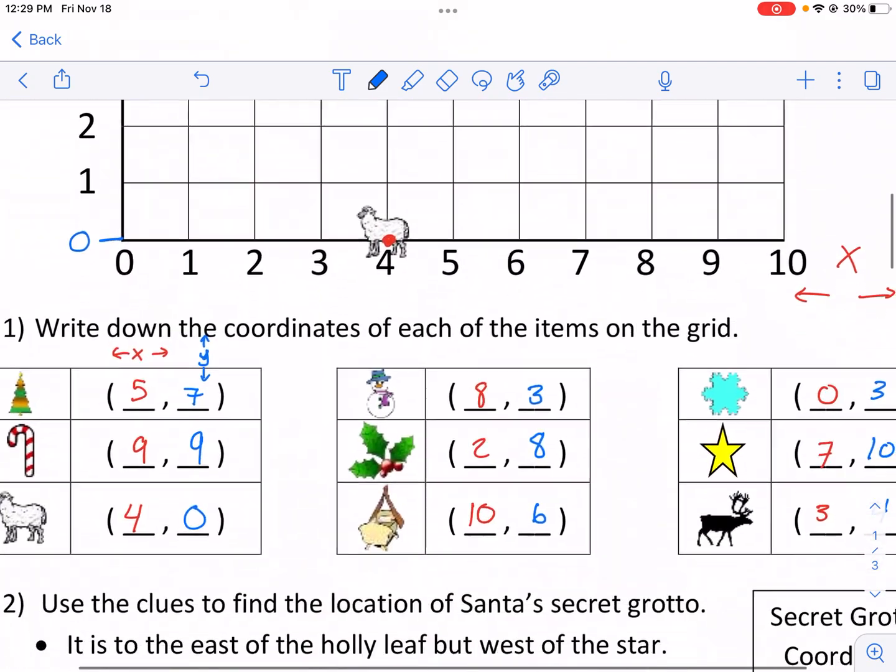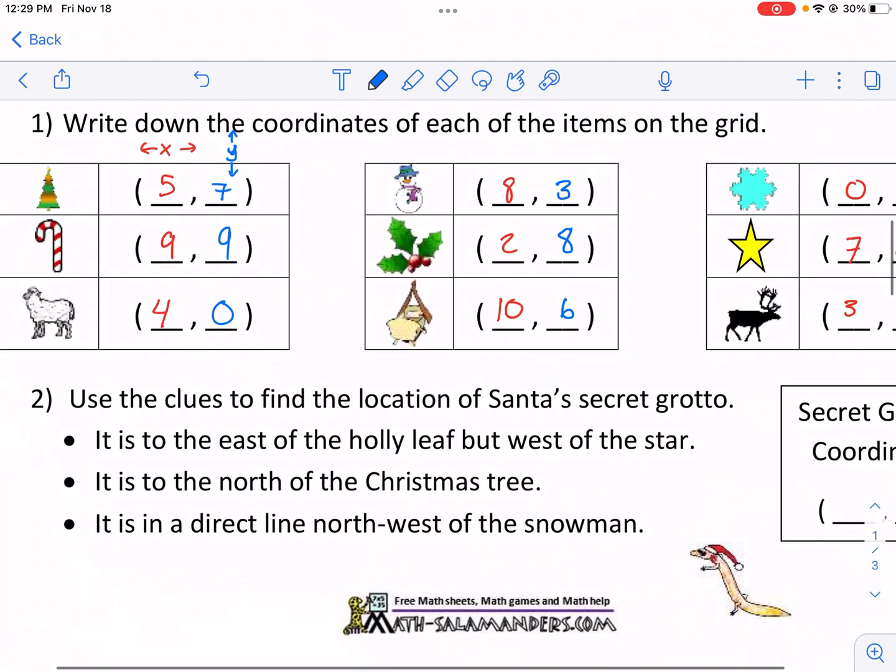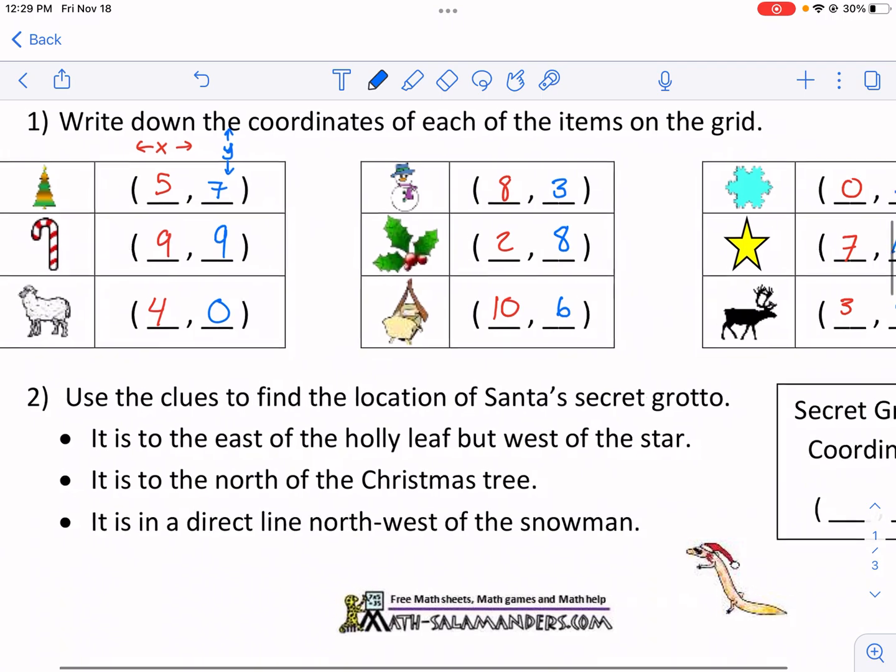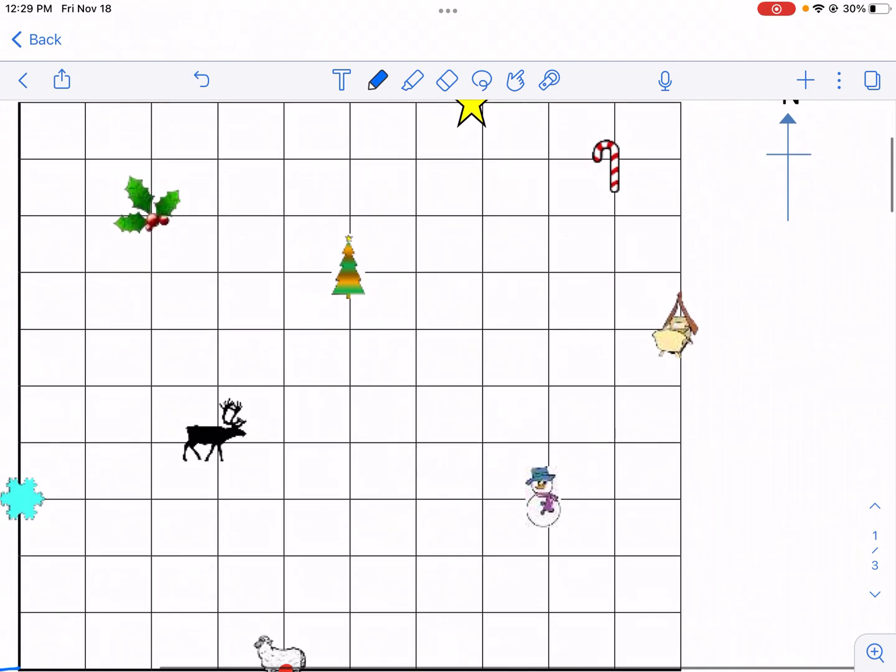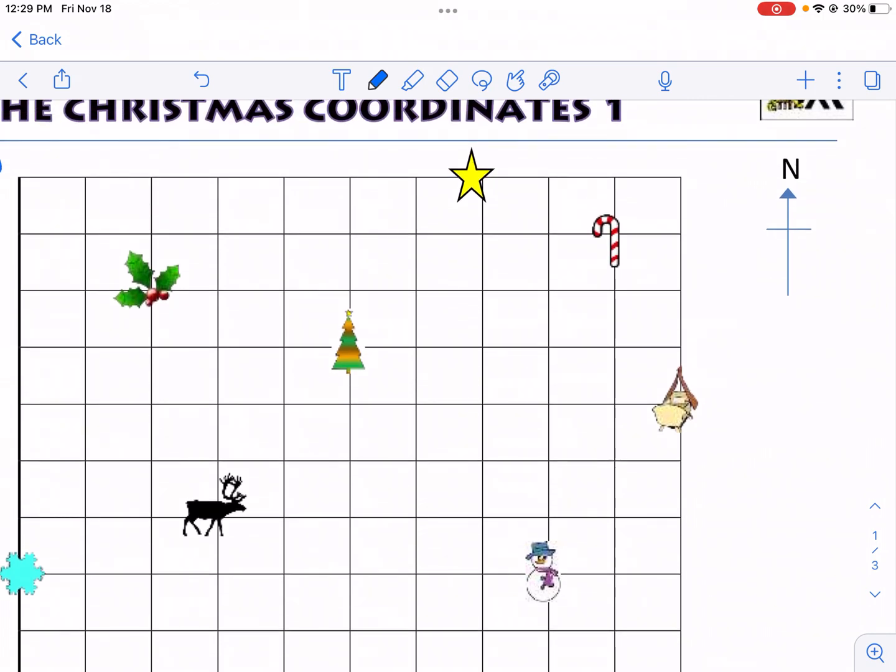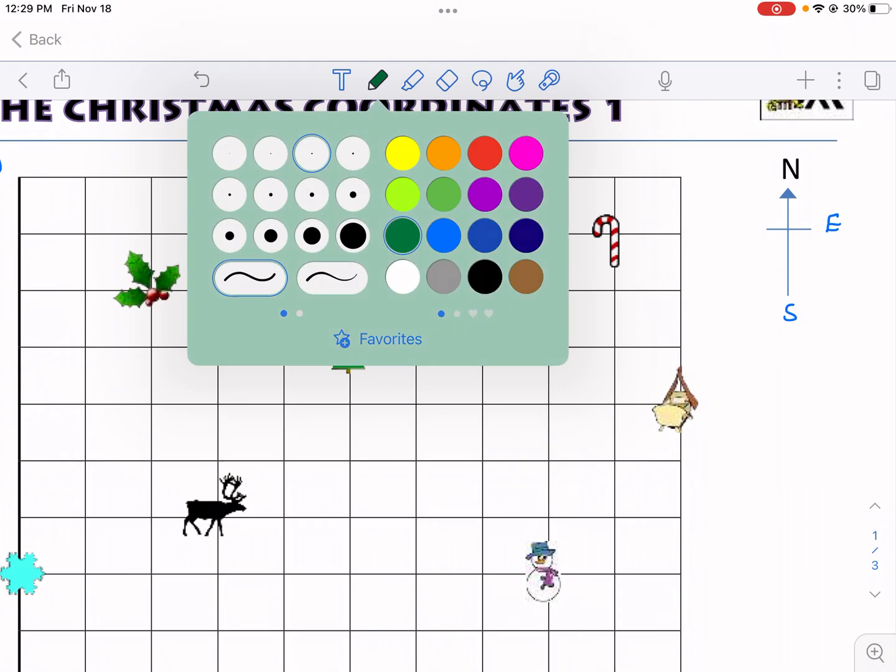That is it. So we have all the coordinates listed. We are good to go and move on to question two. This one's going to be kind of cool. Use the clues to find the location of Santa's secret grotto. It is to the east of the holly leaf, but west of the star. So this is kind of fun. This is more like maps now. So maps use a very similar principle. Here you can see we have north, and this is going to be east. This is going to be south, and of course, the best one, west.